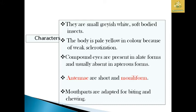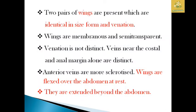The antennae are said to be short, and a moniliform type of antenna is present. The mouthparts are adapted for biting as well as chewing. Continuing the characteristics, they have a pair of wings which are identical in size, form, as well as venation.